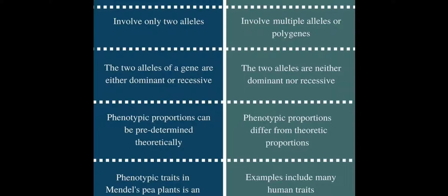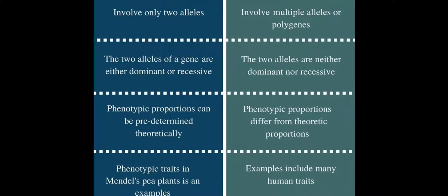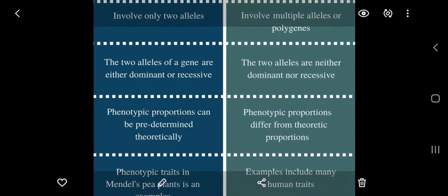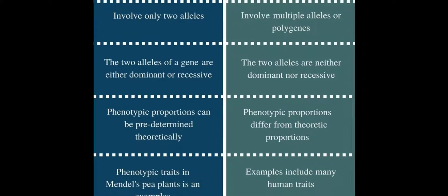Next, phenotypic proportions can be predetermined theoretically in Mendelian inheritance, while in non-Mendelian inheritance, phenotypic proportions differ from their theoretical proportions. In Mendelian theory, phenotypic ratio and genotypic ratio are already established — phenotypic ratios are determined on the basis of genotypic ratio.